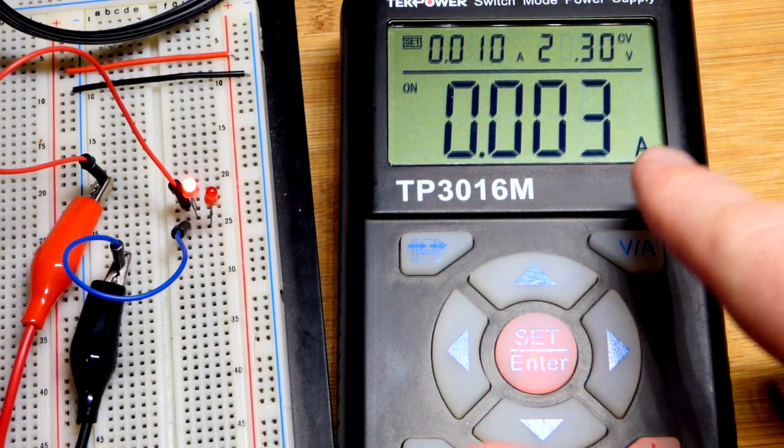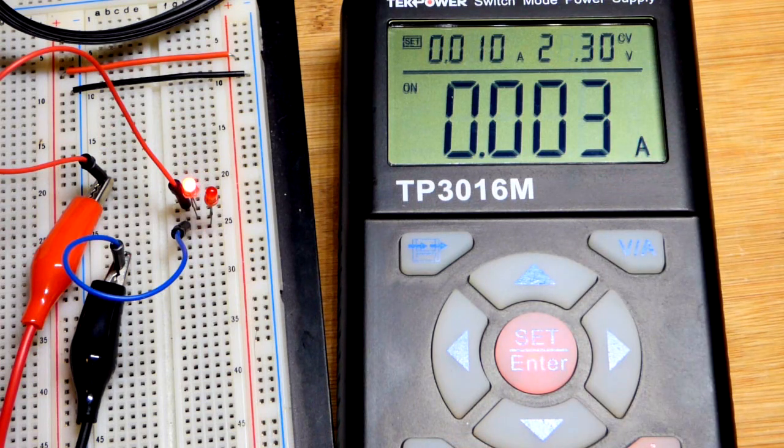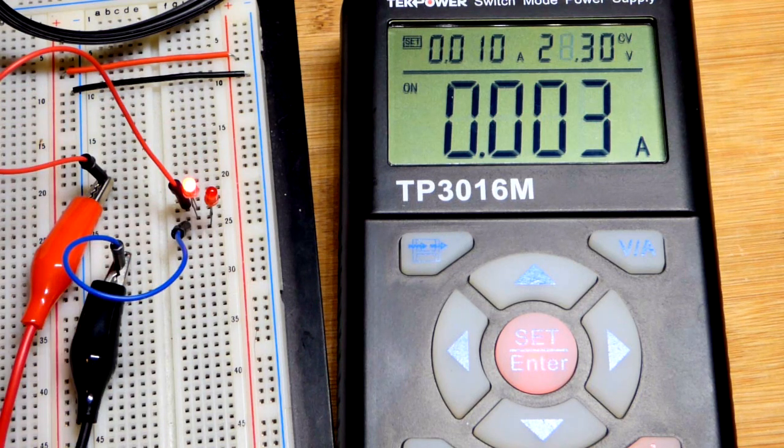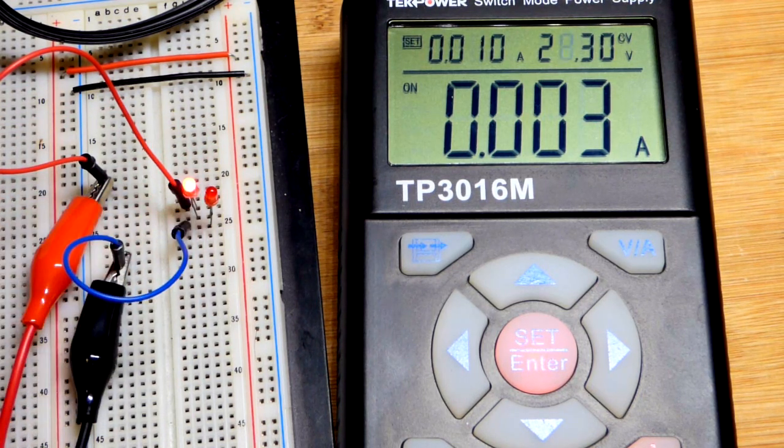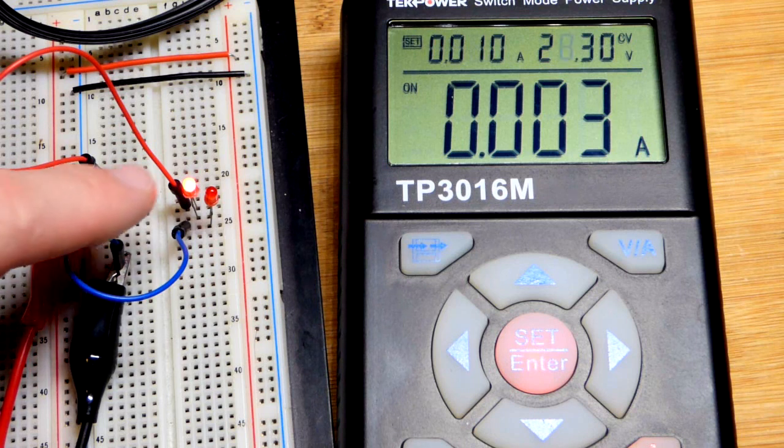And we got somewhere around 3 milliamps of current flowing through both of the LEDs because they are in series. The one that's reverse biased is not lighting up. It has current going through it backwards. The one that is forward biased is lit up. It's letting current go through it.